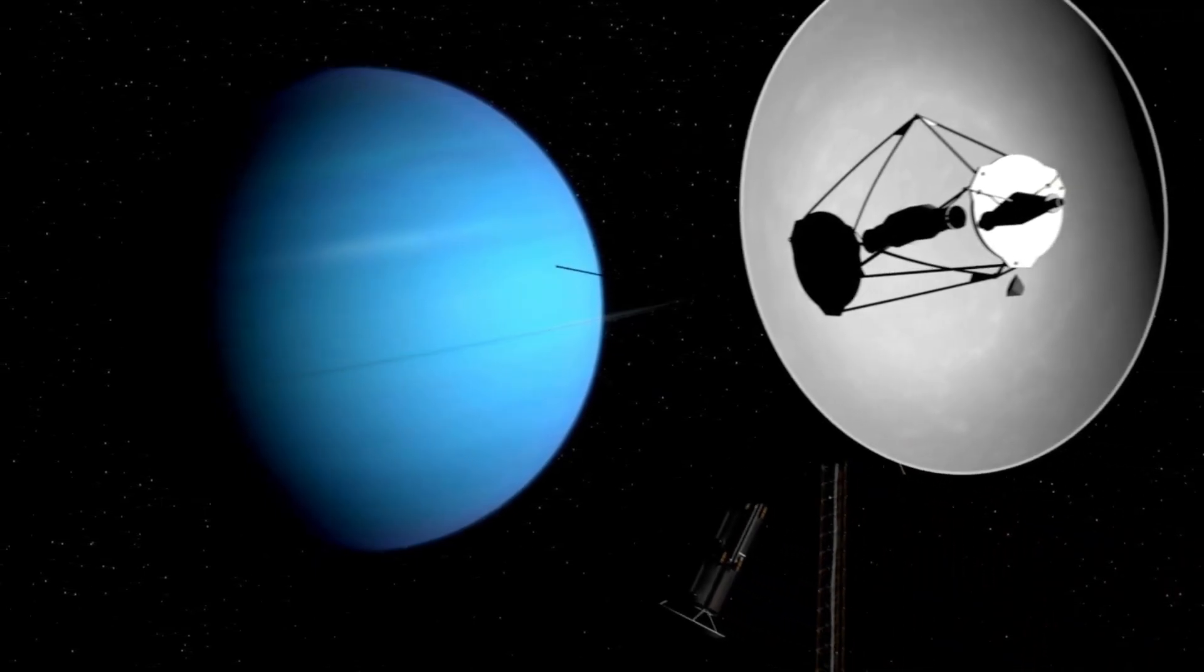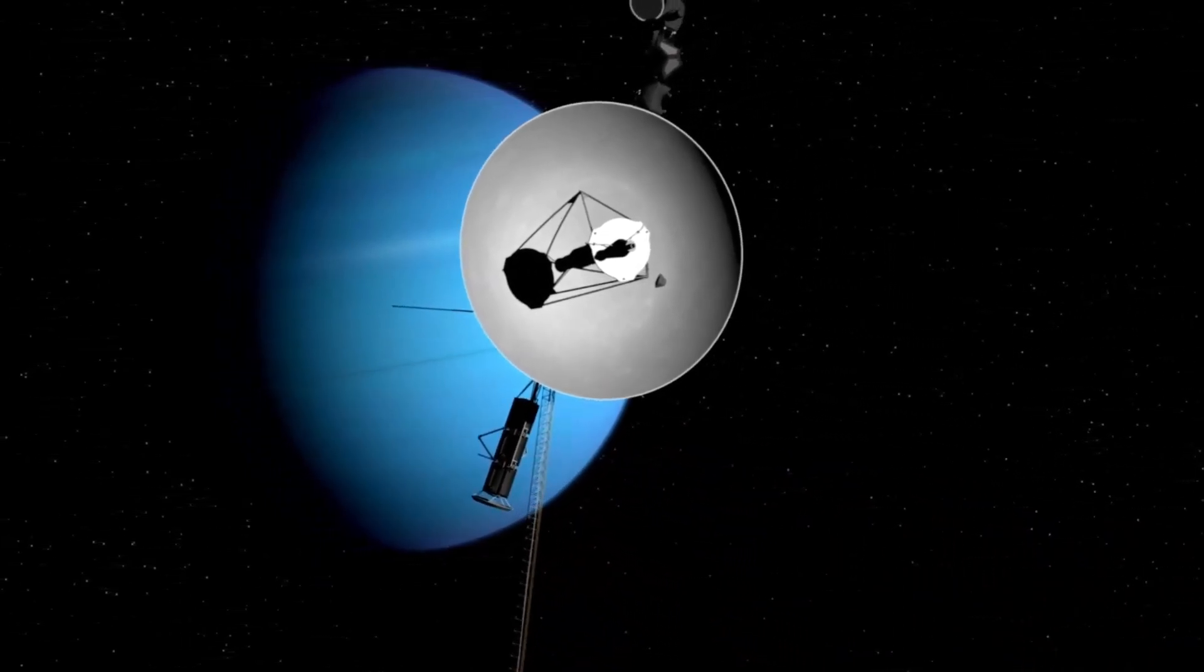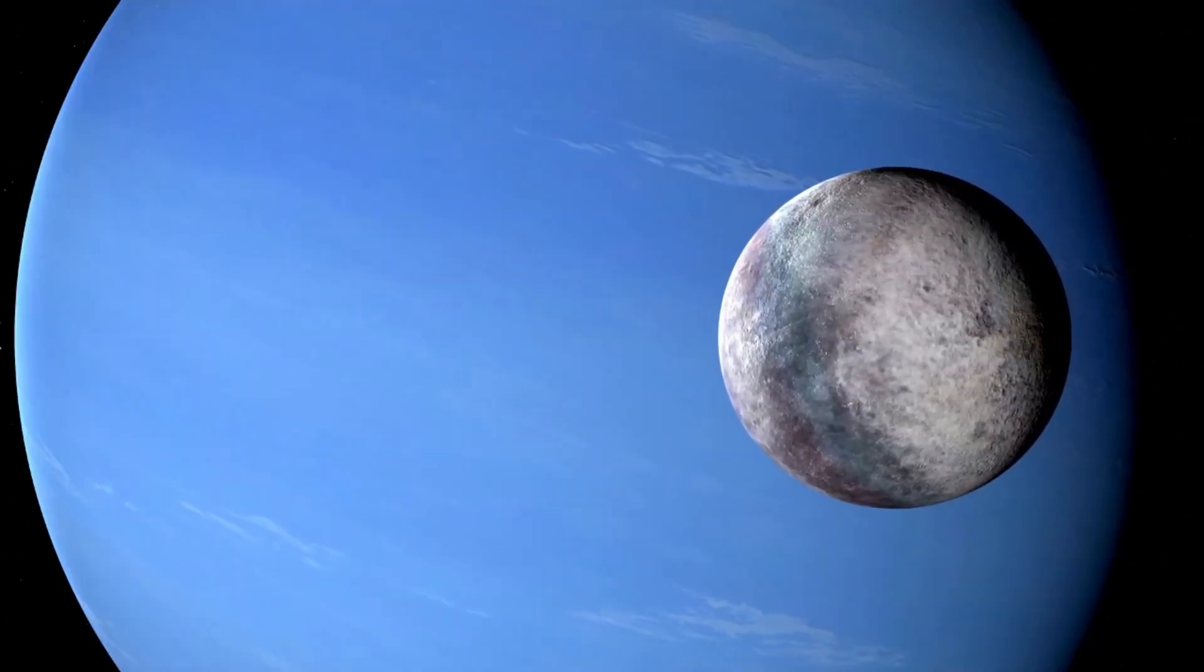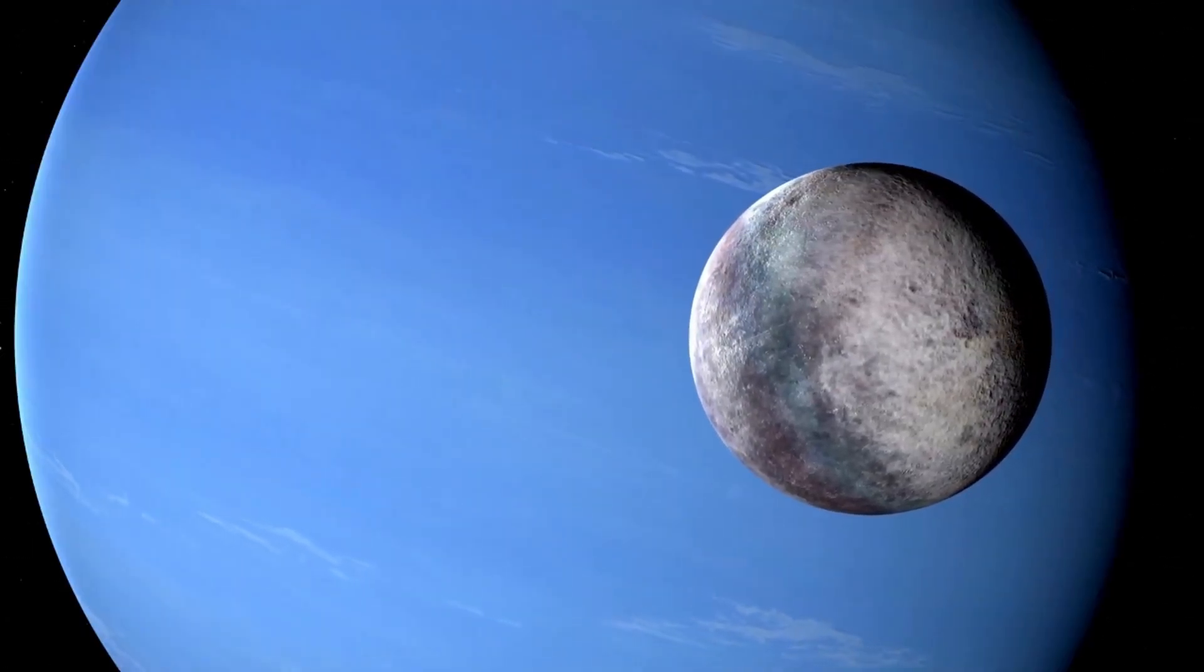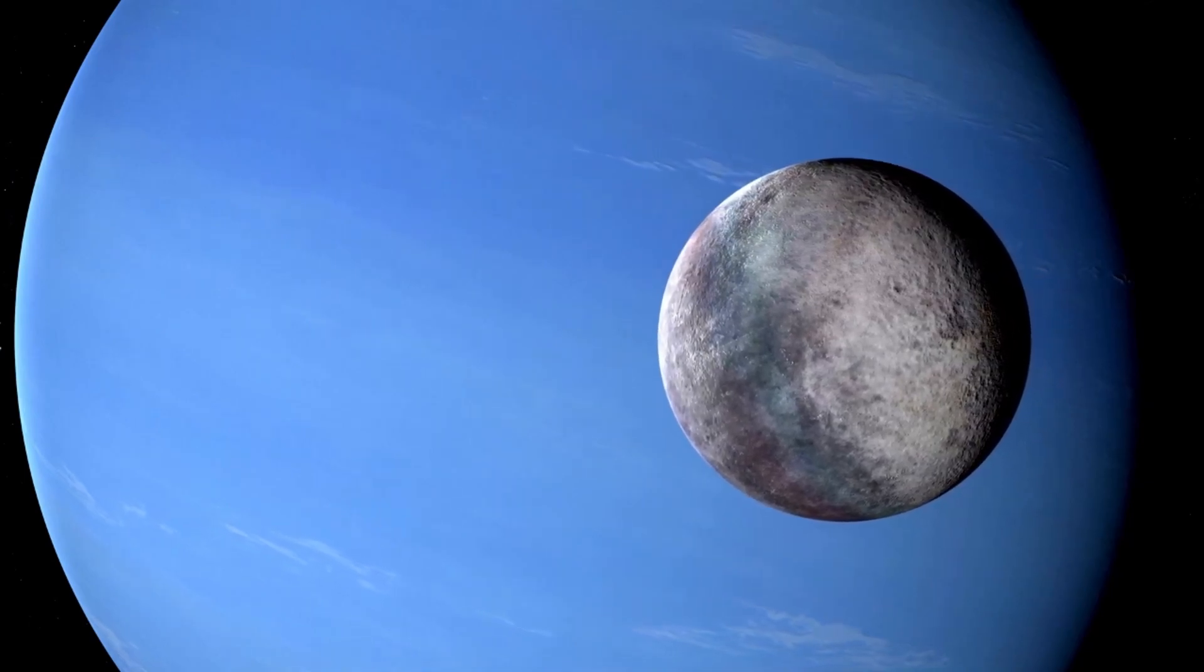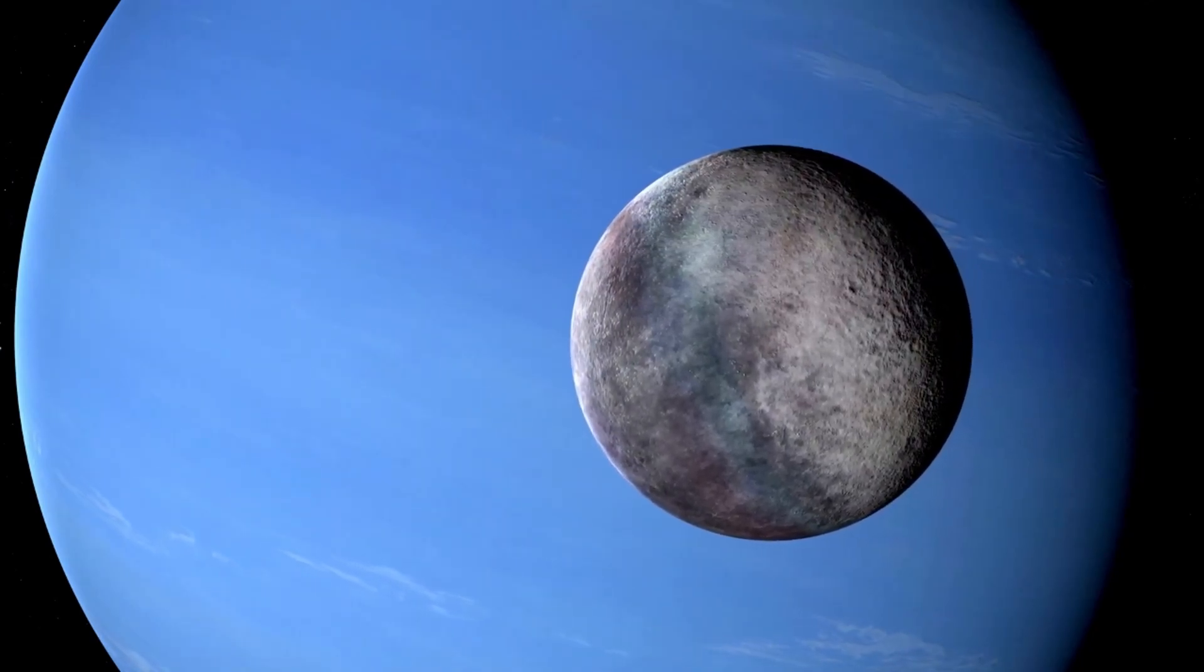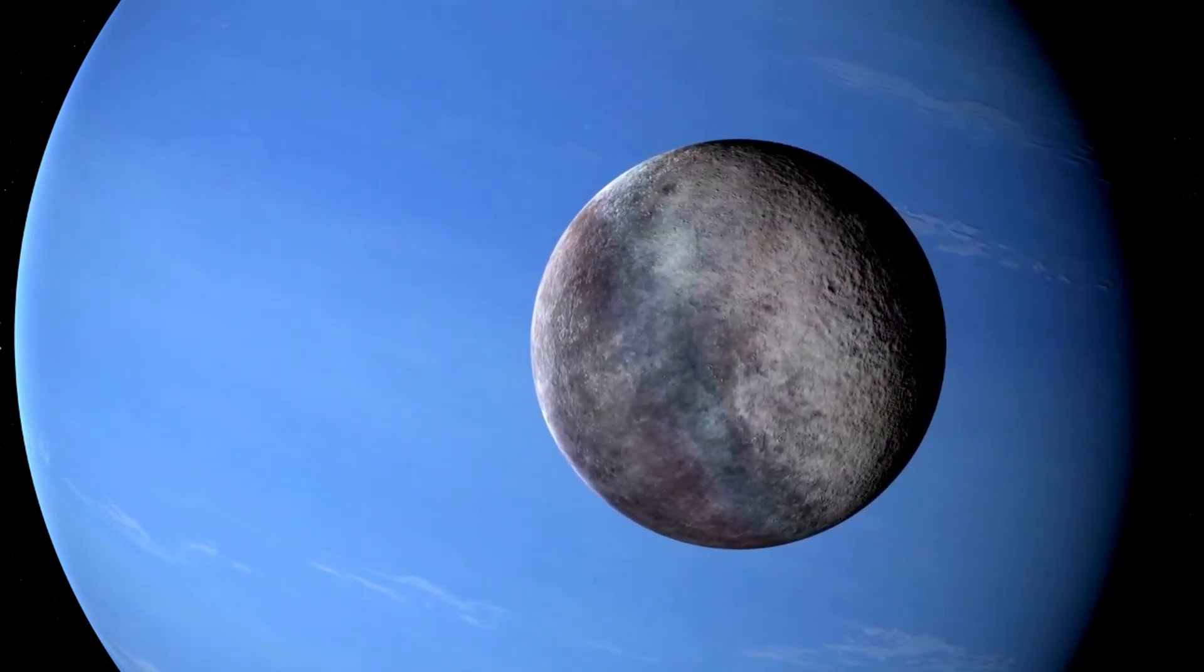Triton, Neptune's largest moon, was found to be one of the coldest locations in the solar system, with surface temperatures as low as minus 391 degrees Fahrenheit, minus 235 degrees Celsius. Ice volcanoes on Triton were observed ejecting nitrogen gas and particles 5 miles into its thin atmosphere.